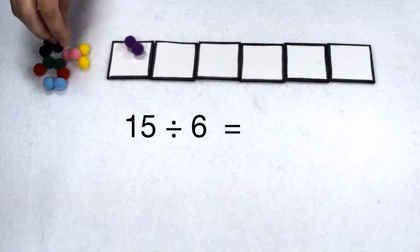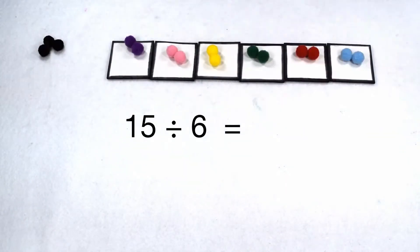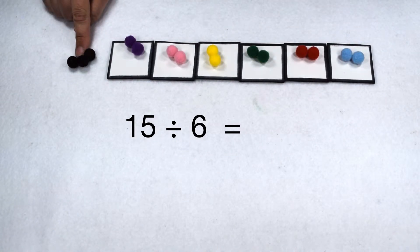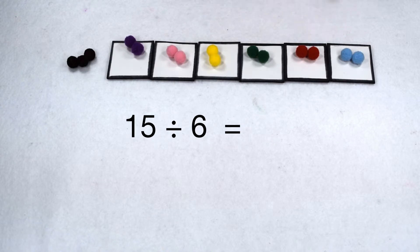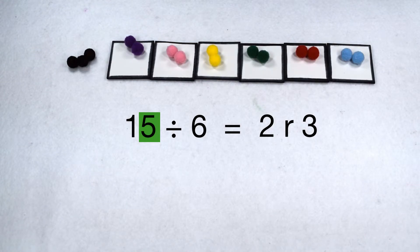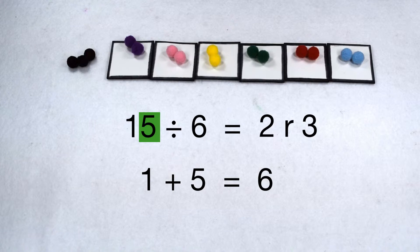Now we'll test out dividing fifteen by six. We start arranging our items so that we have the same number put into each group of our divisor. We can see that we still have two items in each group, but now we have three items left over — there's not enough to put one into each group. So fifteen divided by six gives us two, remainder three. Looking at fifteen more closely, it's an odd number, so it's not divisible by two because it ends in a five. However, one plus five gives us six, and six is divisible by three. But in order to divide by six, it has to meet both rules. Since fifteen is only divisible by three, it's not going to be divisible by six without a remainder.